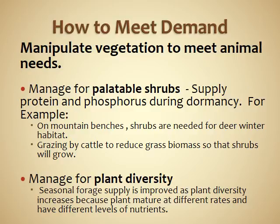One can manage for palatable shrubs to manipulate vegetation and meet animal needs. Palatable shrubs can provide protein and phosphorus during winter. One approach is to graze cattle to reduce grass biomass so that shrubs will grow — shrubs are also important for winter deer habitat. Managing for plant diversity is another strategy: using forages throughout the season improves seasonal forage supply as plant diversity increases, because plants mature at different rates and have different nutrient levels. A wide variety of plants throughout the year helps meet animal needs.